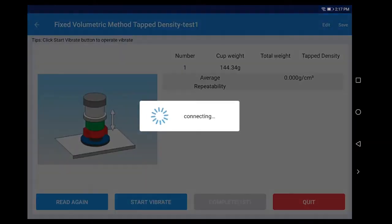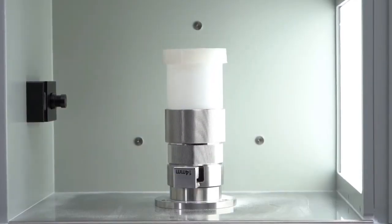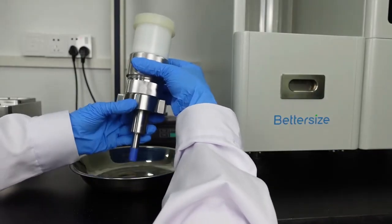Click the Start Vibrate to start vibrating and stop vibrating when the preset vibration times reach. Take out the tap density assembly.